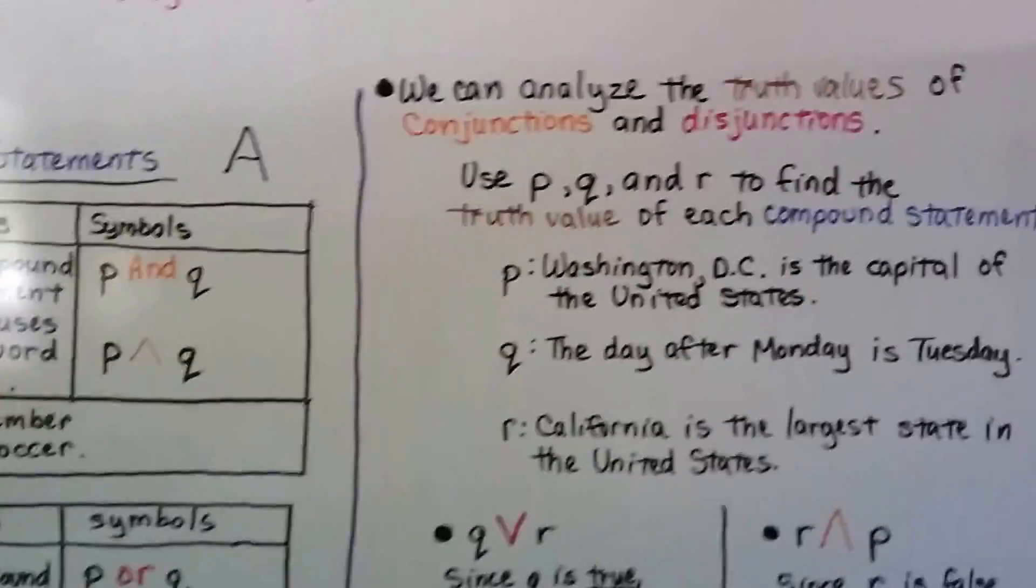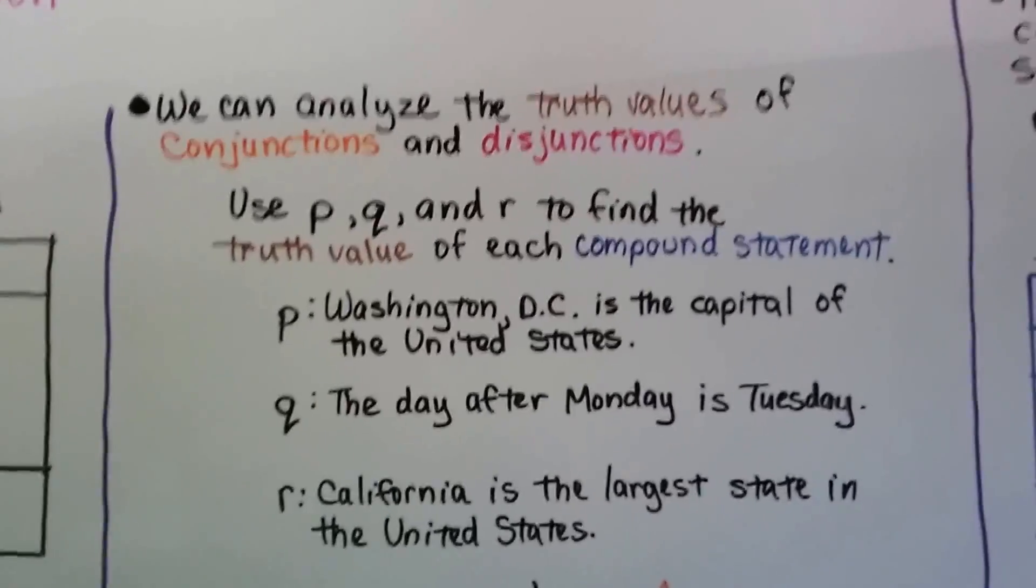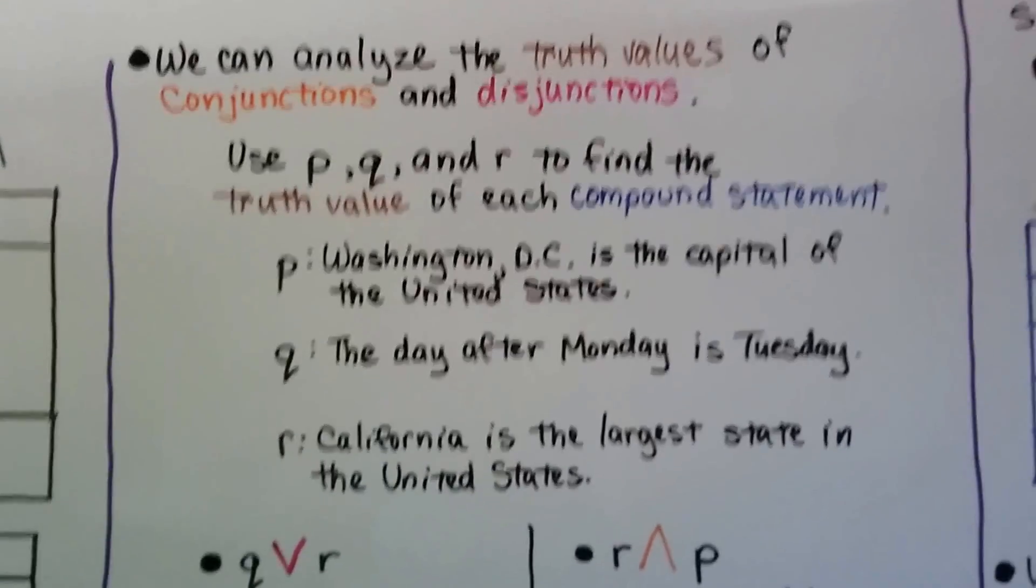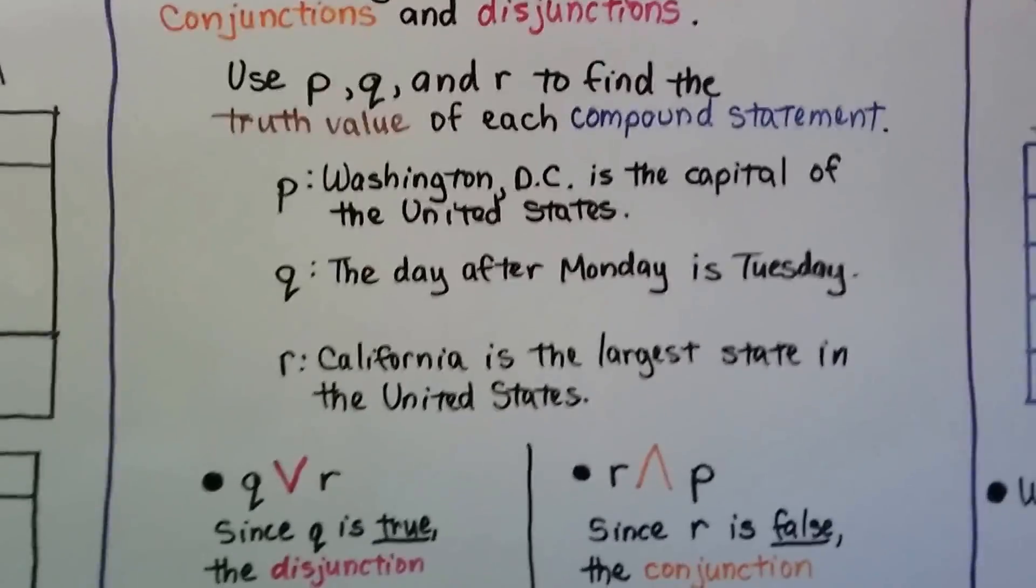We can analyze the truth values of conjunctions and disjunctions. We can use P, Q and R to find the truth value of each compound statement.